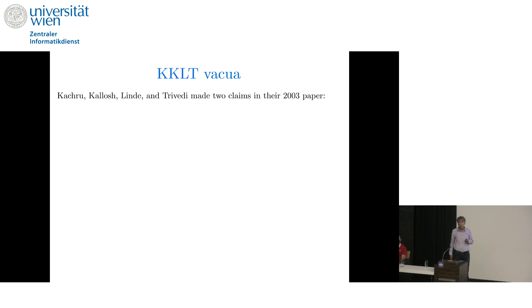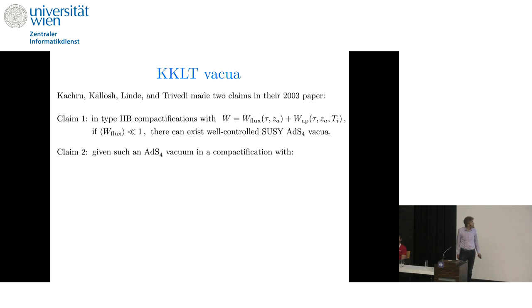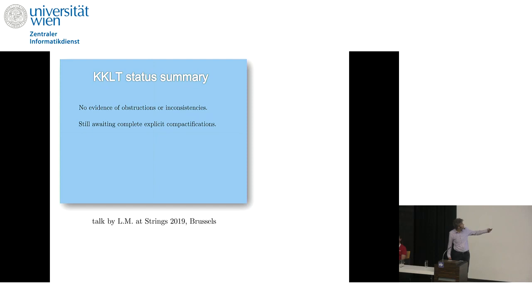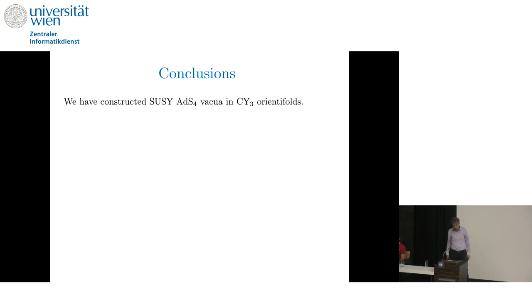Kachru, Kallosh, Linde, and Trivedi made two claims in a famous paper in 2003. They said, claim one: in Type 2B compactifications of the sort I've been describing, if the flux superpotential is small, then there can exist well controlled supersymmetric AdS-4 vacua. Claim two: if you have such a vacuum in a compactification that also has more stuff, a warp-deformed conifold region with one or more anti-D3 branes, then there can exist metastable de Sitter vacua. I've said nothing in this talk about claim two, but I've given what I think is rather strong evidence for the first claim. So when I gave a review talk about de Sitter constructions at Strings three years ago, I said we were still awaiting complete and explicit compactifications. I would change that now. I think that for the purpose of AdS vacua, we can say that we do have complete explicit compactifications. That's what I have just shown you. Whereas for de Sitter, it's still very much a work in progress.